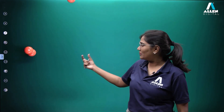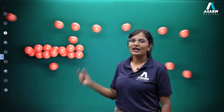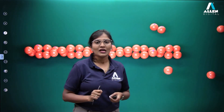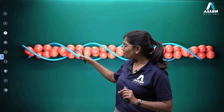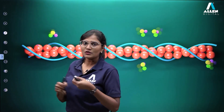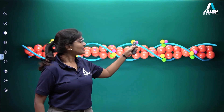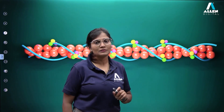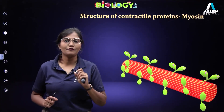Looking at the image: the small beads are G-actins, and many G-actins combine together to make two F-actins which are helically coiled. Then tropomyosins are also intertwined, and troponins are present at regular intervals of tropomyosins. This completes the actin part — the thin filament.